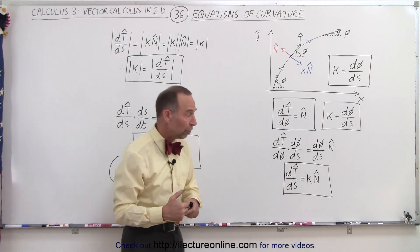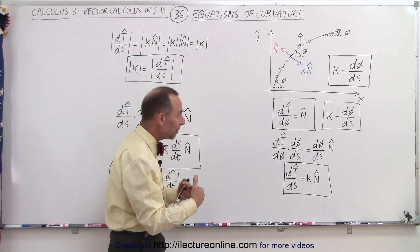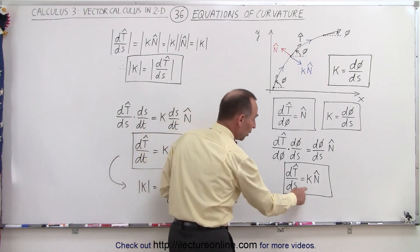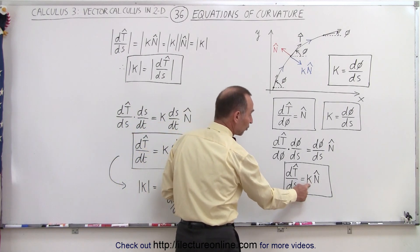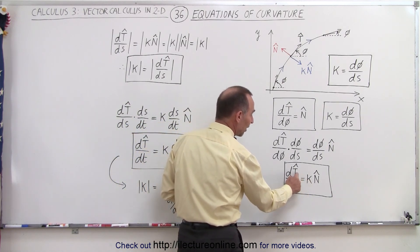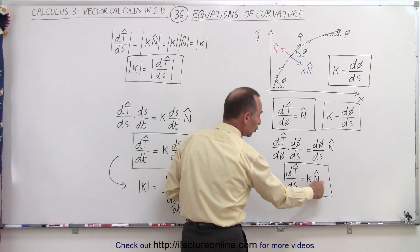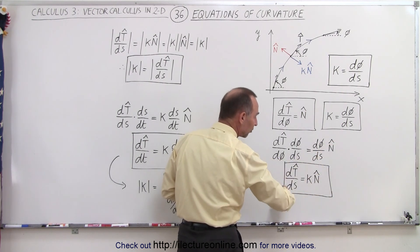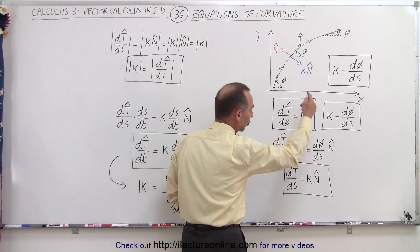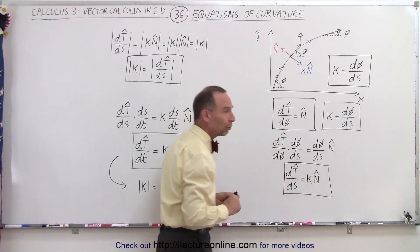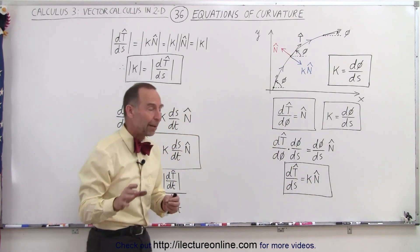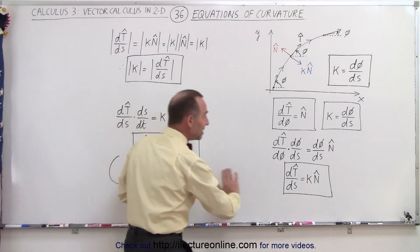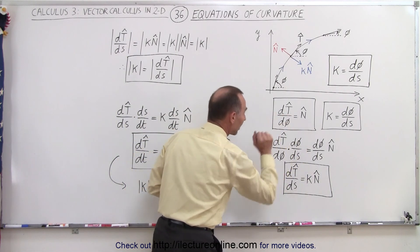So now we have a new equation where we've eliminated the angle phi. We can now determine a relationship between the curvature of the curve and the unit tangent vector and unit normal vector, along with traveling along the distance s along the curve — relating kappa to T and N without the need of the angle phi.